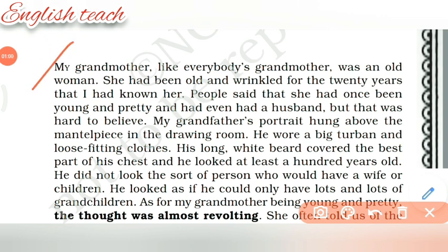First line: 'My grandmother, like everybody's grandmother, was an old woman. She had been old and wrinkled for the 20 years that I had known her.' Here the word 'wrinkled' means having lines or folds on the face. It looks like the old people's face — dry skin with many lines going here and there. That's the meaning of 'wrinkled.'